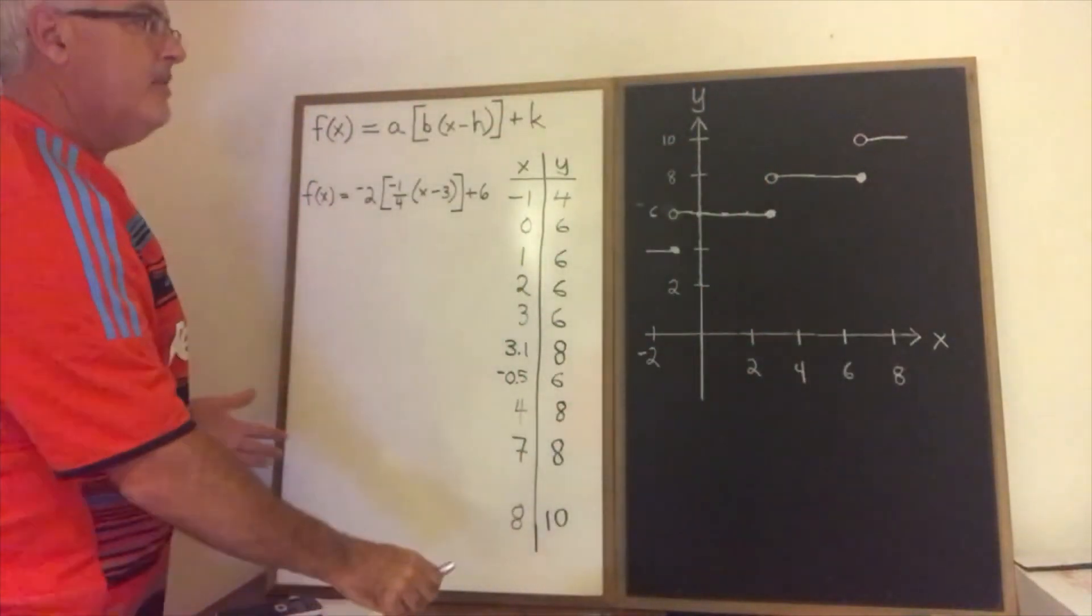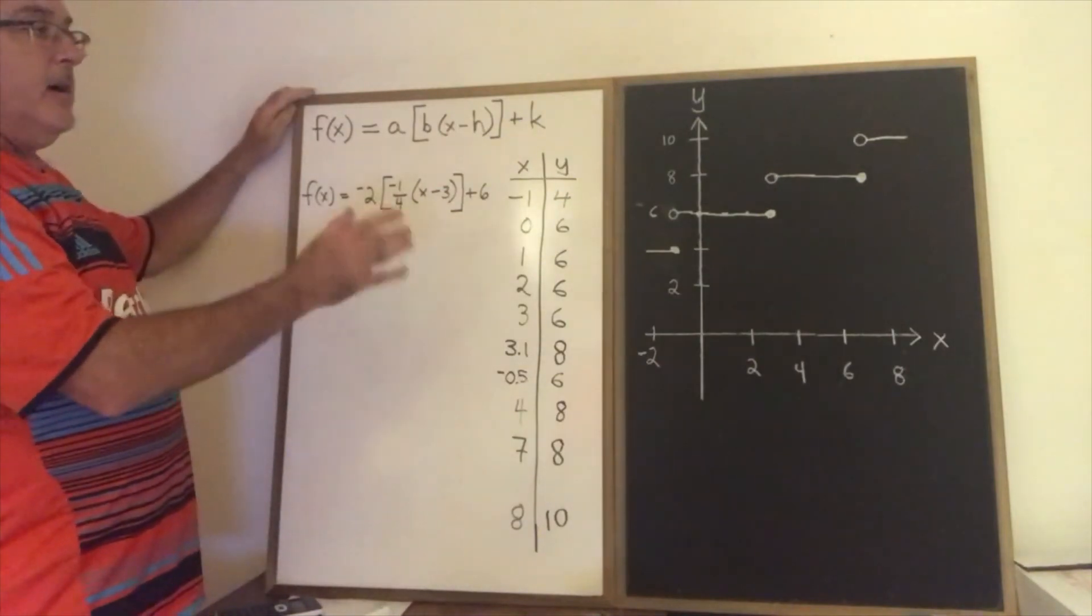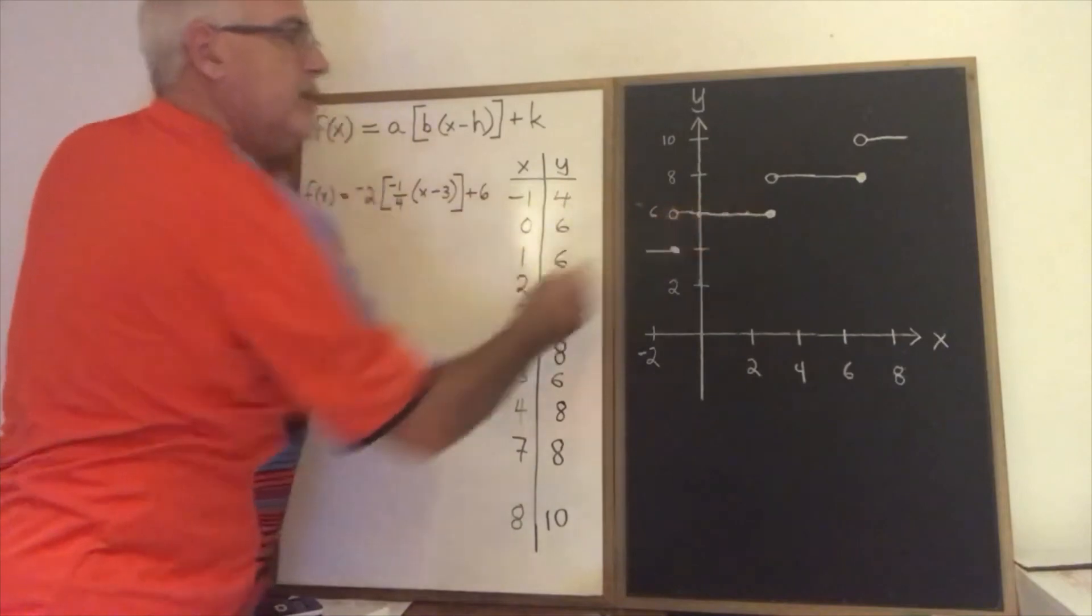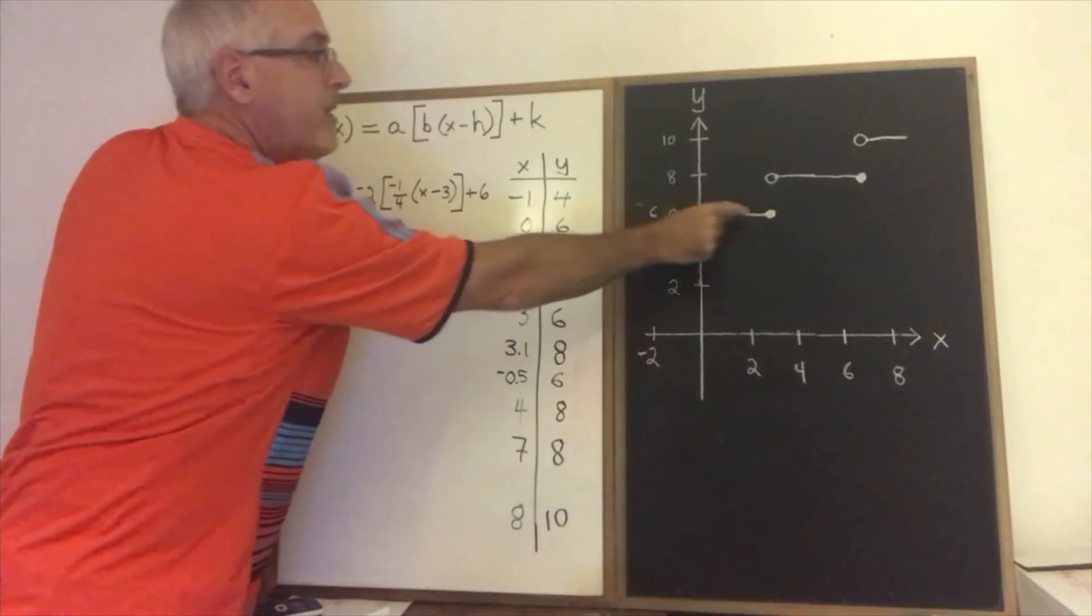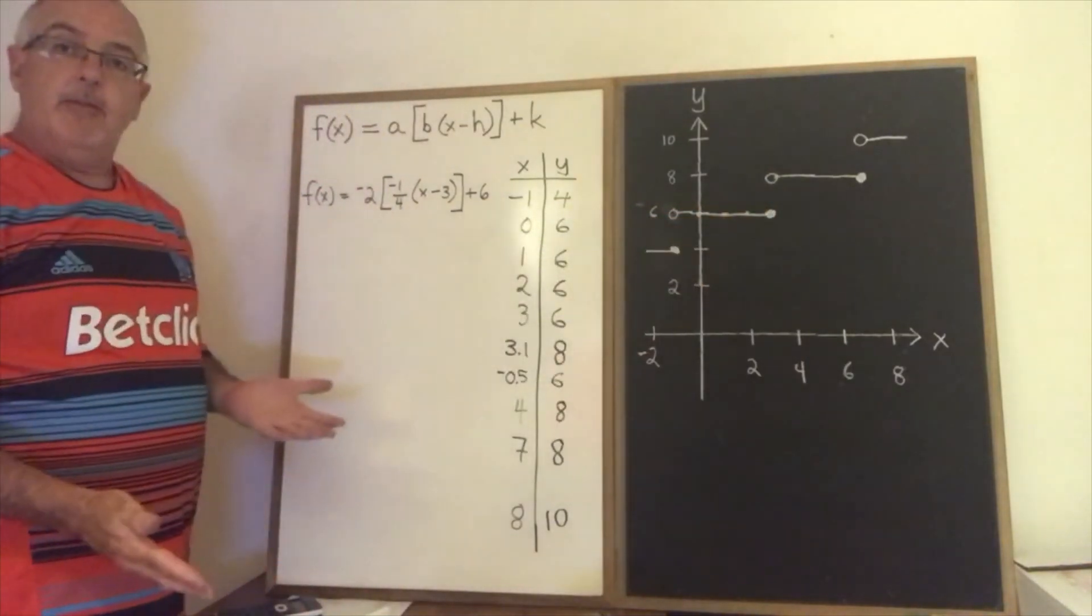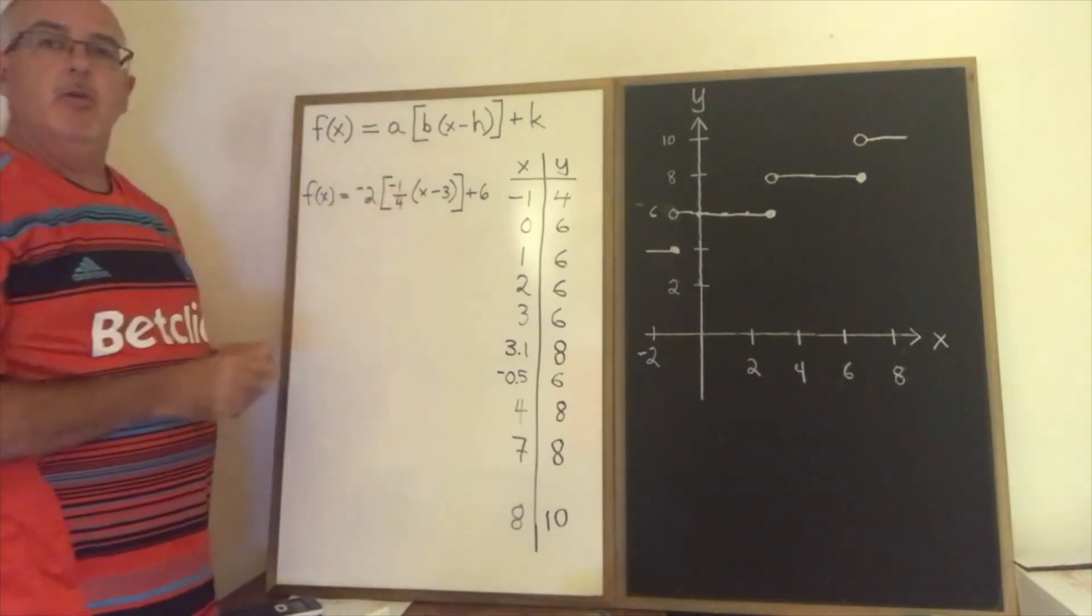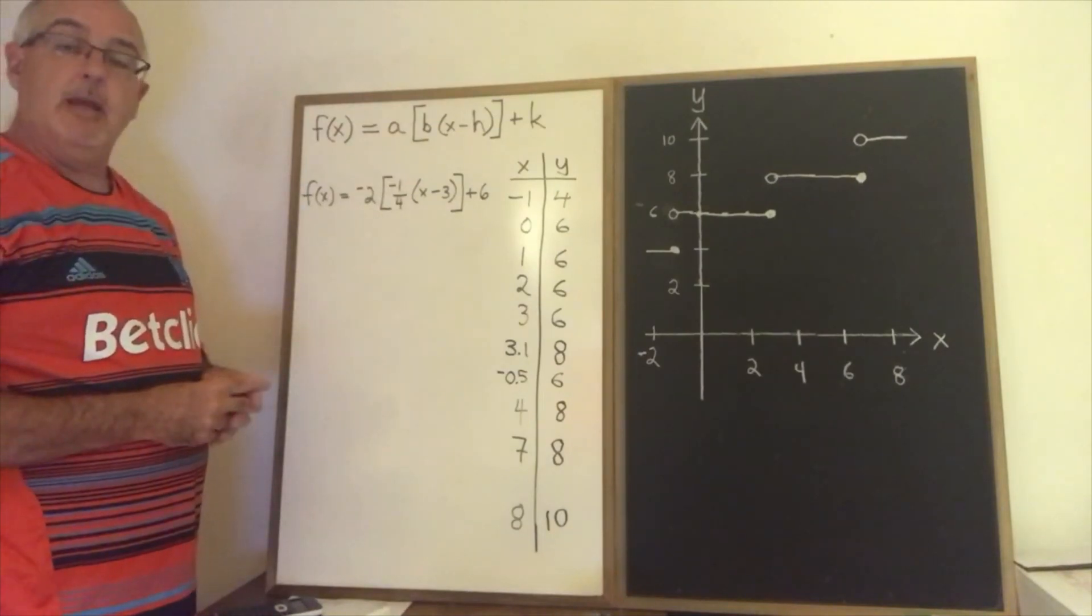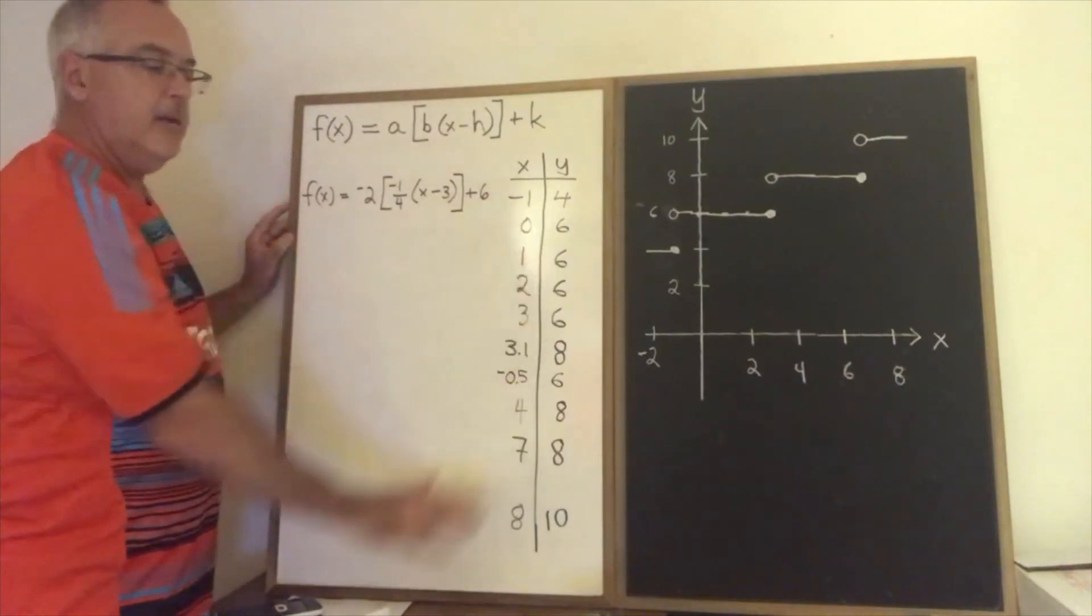I have graphed my step function and I have discovered some things by doing it trial and error. I discovered that the steps are two units in height, that they're four units in length, that the closed circle is on the right side of the step and the open circle is on the left side. So I have succeeded in graphing this function. Now the problem with this is that it took a long time. If we use the parameters we can do it much faster. So be sure to watch another video that I'm making that shows me graphing the same function but using the parameters instead of a table of values.